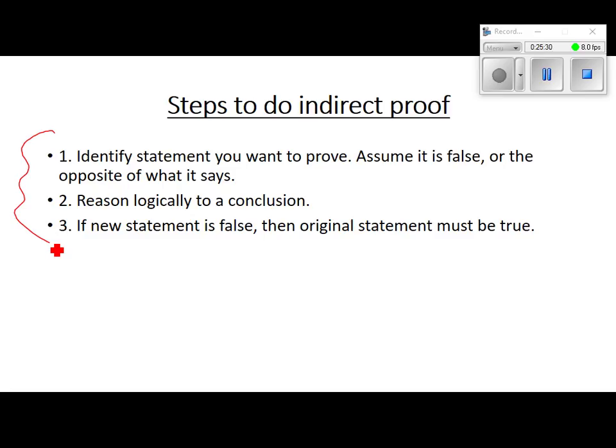So these are the steps. First, you identify the statement you want to prove. Assume it's false, or make it the opposite of what it is. Reason through it logically with a new statement. If you go through and that new statement is false, what does that tell us about the original statement? It's got to be true. We're not going to do a whole lot with indirect proofs. The main thing I want you to know is how to start one.